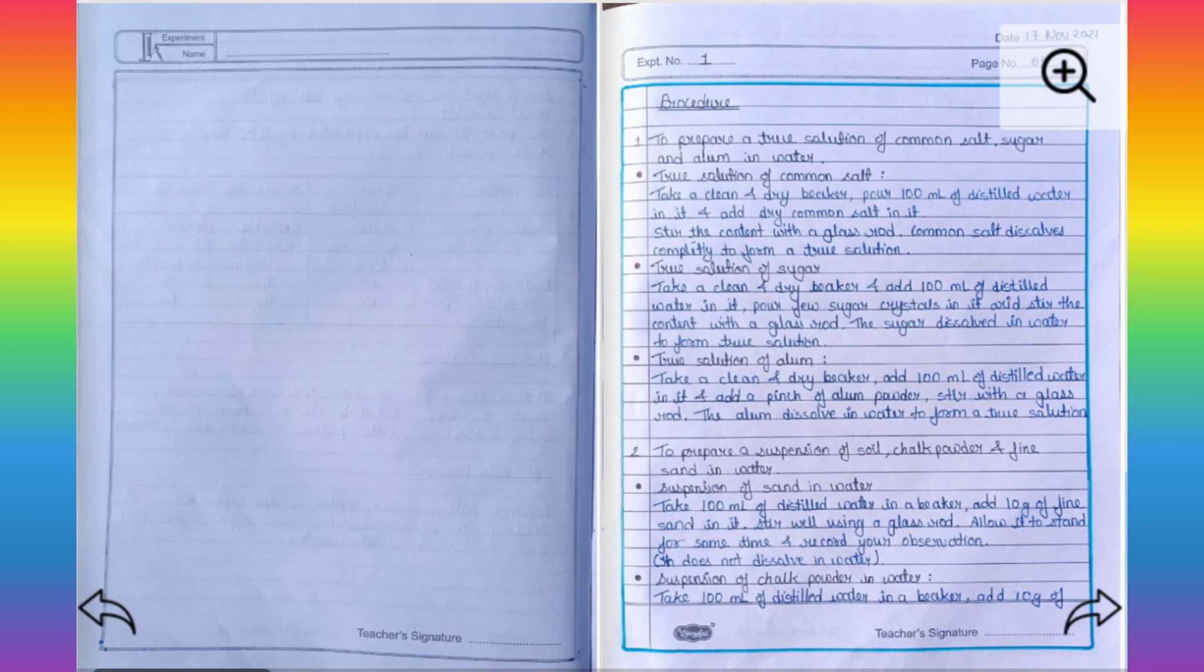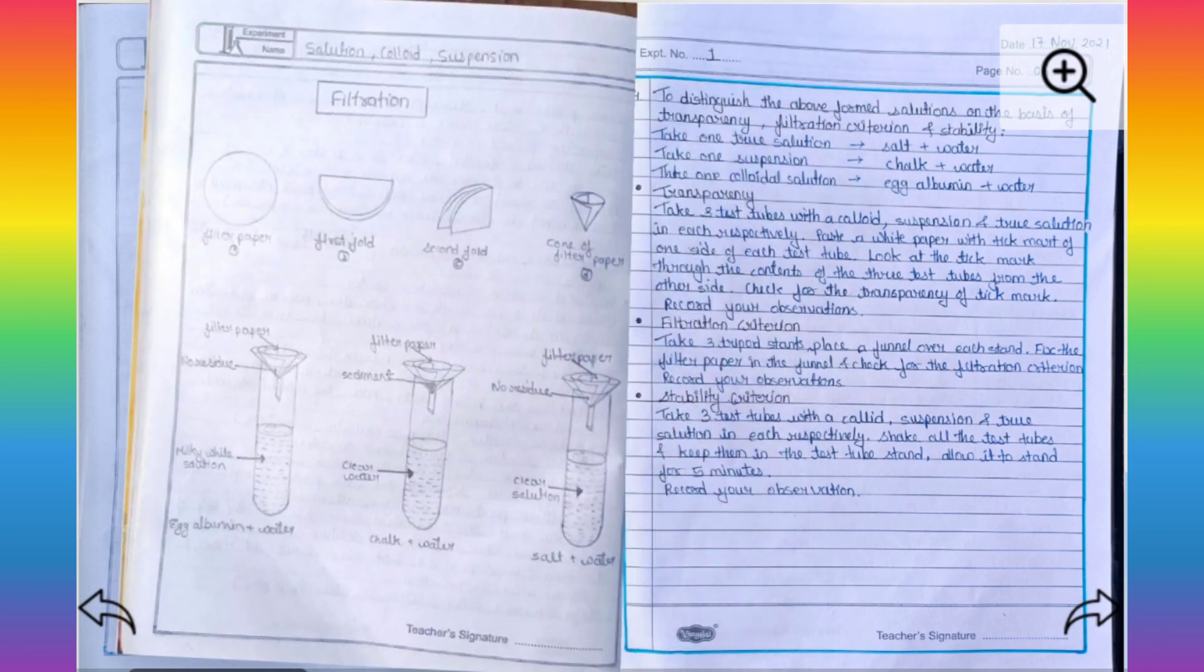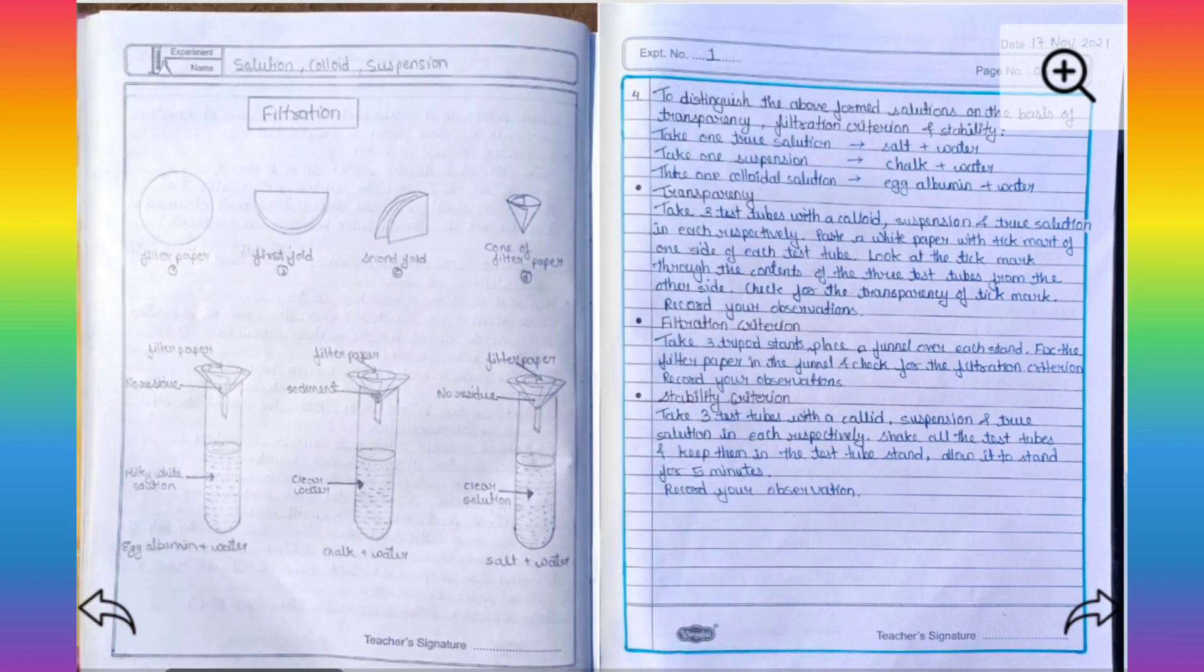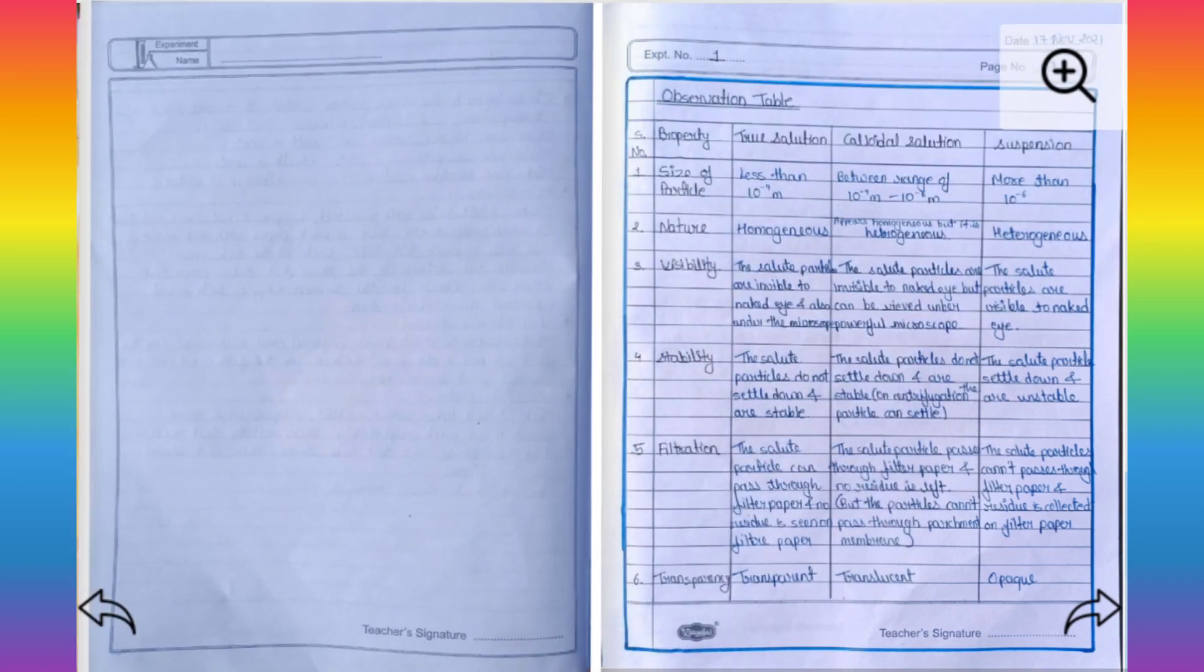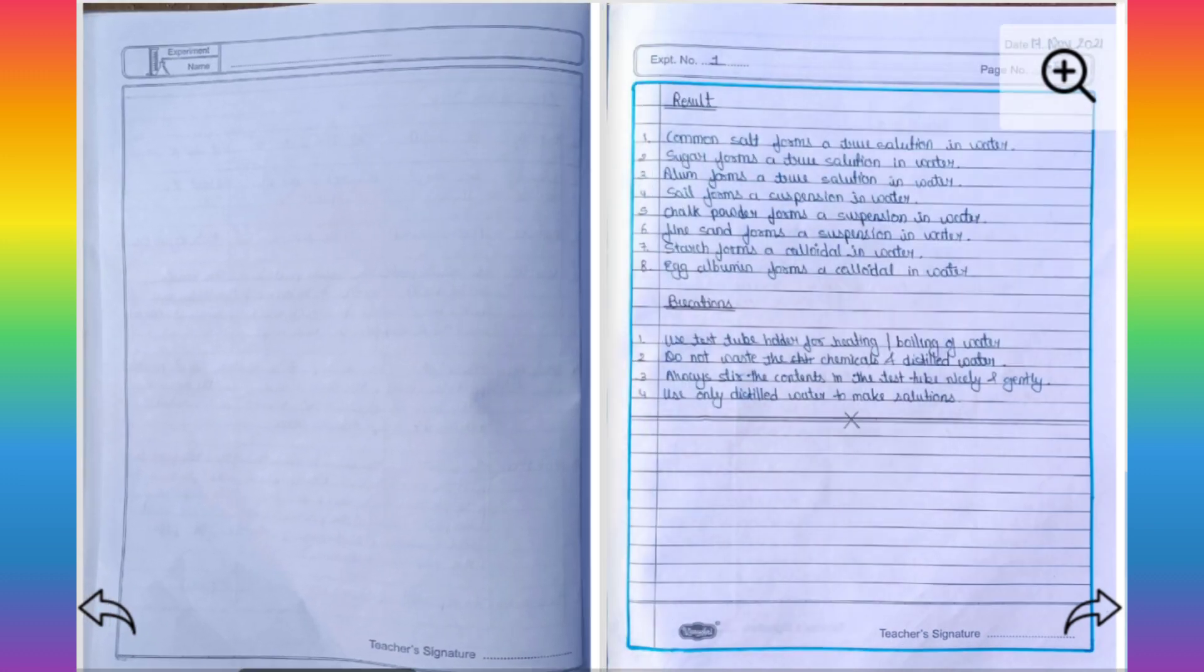Then I write procedure. After that, I again draw some diagrams and then I draw observation table and after all the things, I write result and conclusion of the experiment and then important precautions.